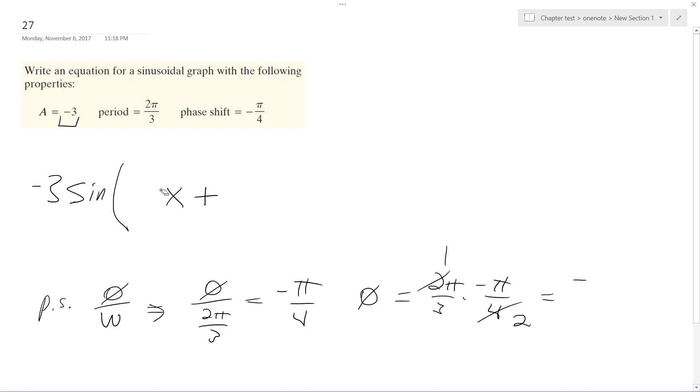Period should actually be two pi over three. It should be three. I made a mistake, I'm sorry about that. So all this, yeah, it should be three, so you multiply it by three. So theta is going to be equal to negative three pi over four, so this just becomes plus three pi over four.